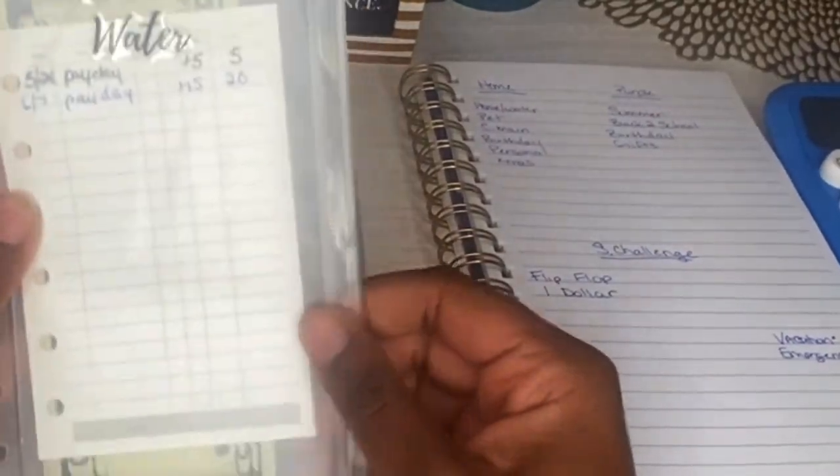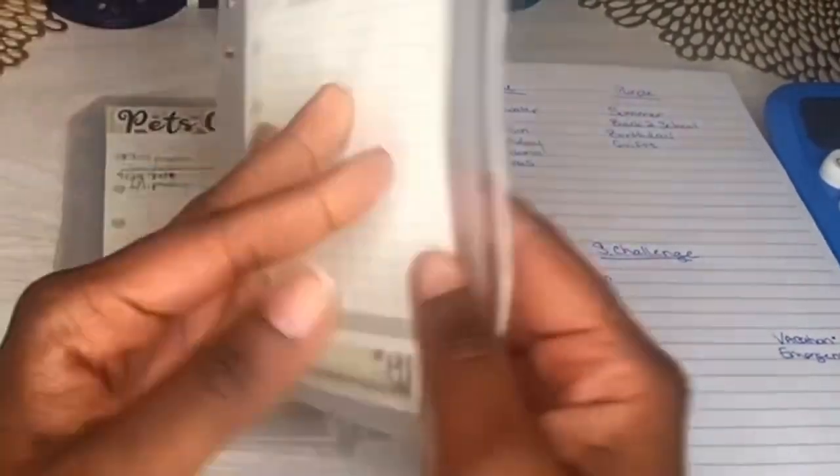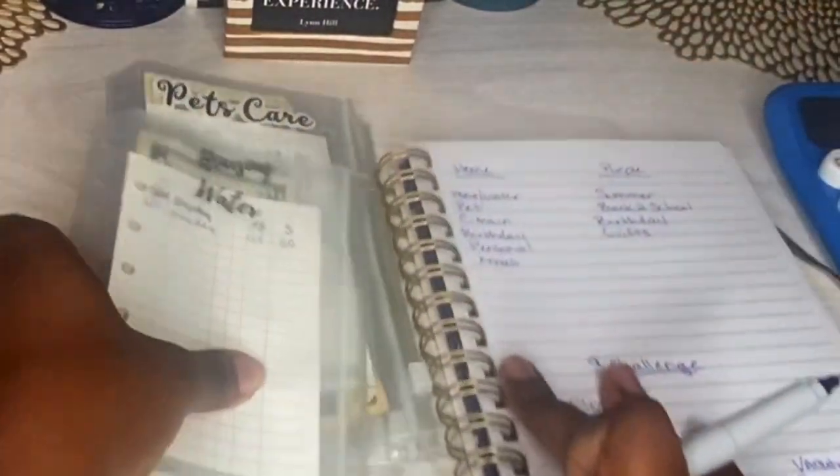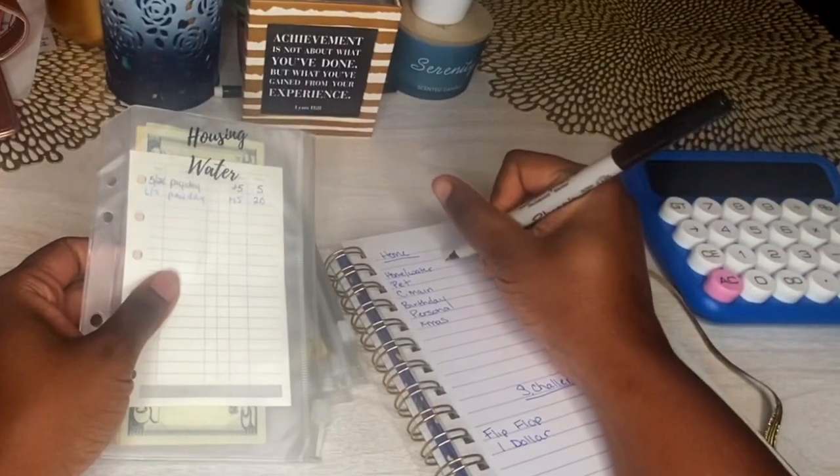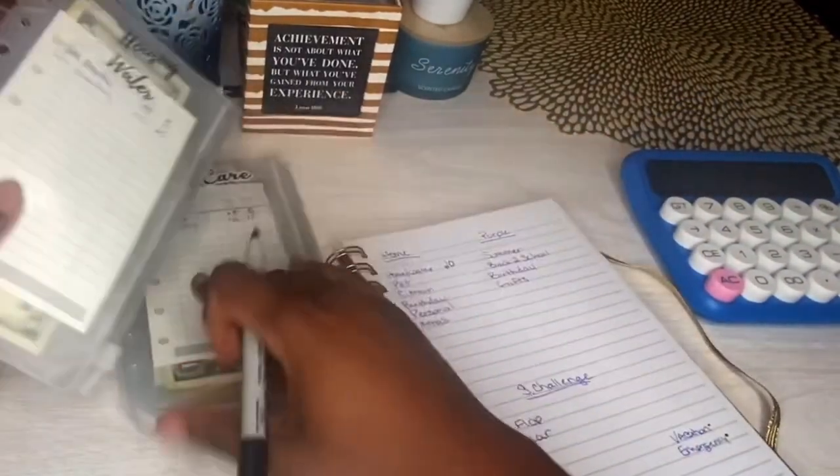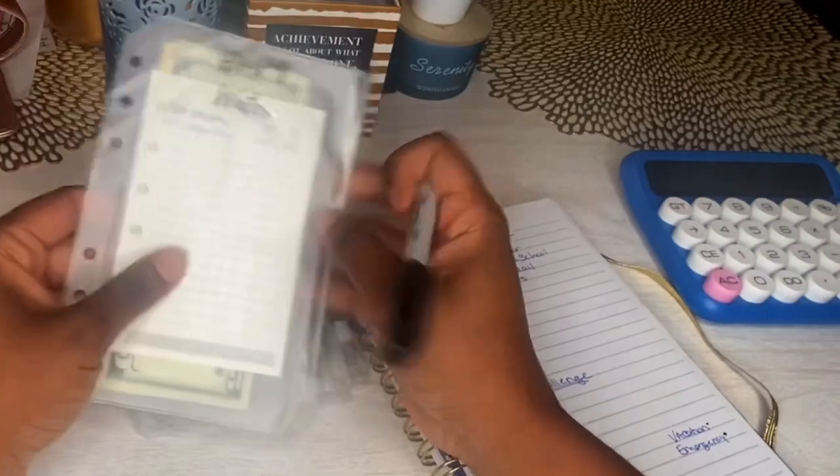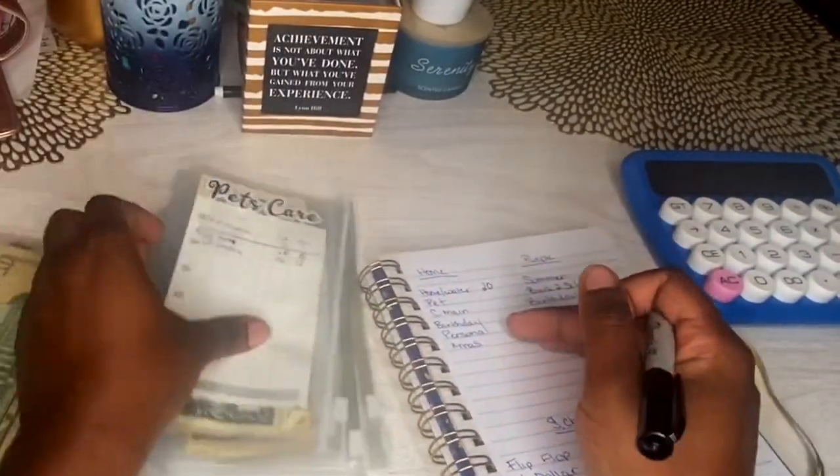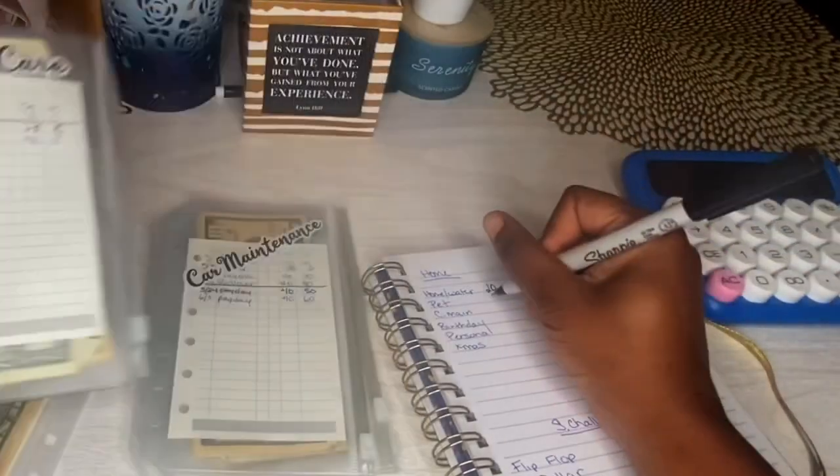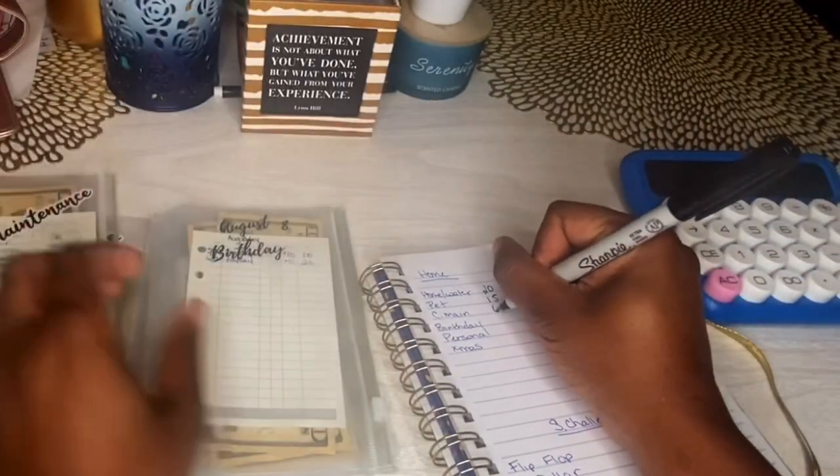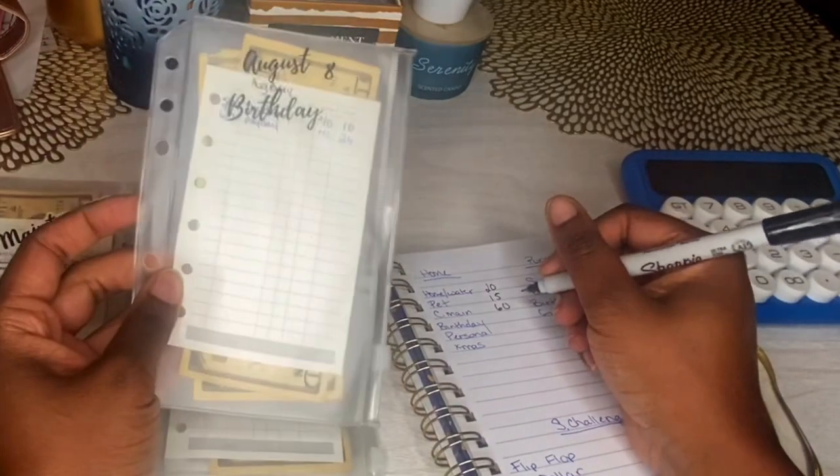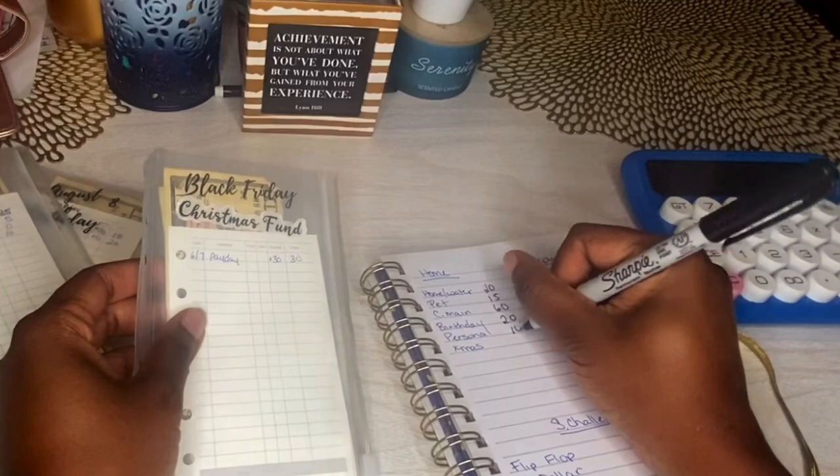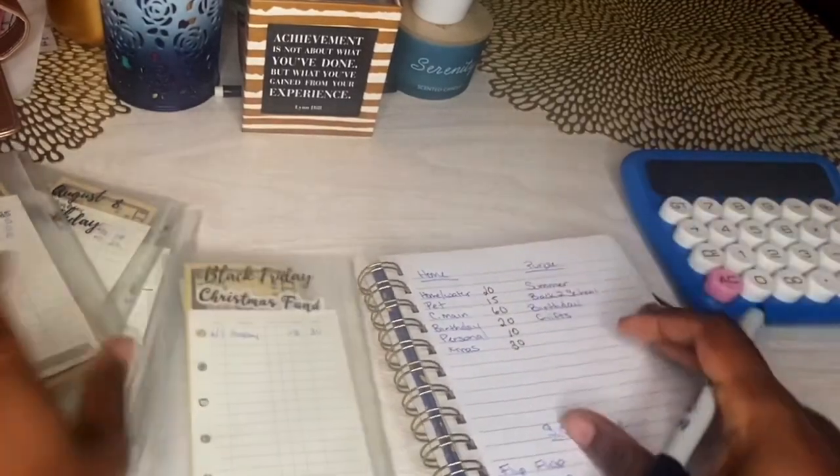Okay, housing and water, and I don't really need to open these. You guys have seen me stuff these. I'm just going to go ahead with what I have written down because I know that is accurate. So twenty dollars in home and water. Pet care right now there's fifteen. Car maintenance has sixty. Birthday has twenty. Personal has ten, and Christmas has thirty.